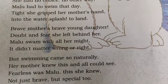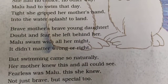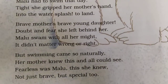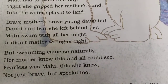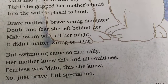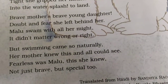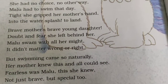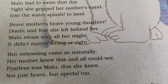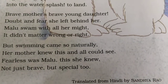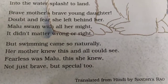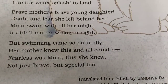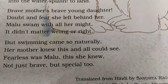But swimming came so naturally, her mother knew this and all could see. Fearless was Malu, this she knew — not just brave, but special too. Lekin jo Malu Balu thi, jab usne paani mein splash kiya, to usko naturally swimming aagi — means kuch bachche hote hain na jise god gifted hota hai, unko kuch cheezein easily aati hain. To aise hi Malu Balu ko swimming naturally aayi, kyunki jitne bhi bears vaghera hain, unko barf mein woh log swimming kar sakte hain. Uski mother ko pata tha ki unki beti bahut fearless hai, usse dar nahi lagta, aur woh easily swimming seekh sakti hai. Aur jo Malu Balu thi, woh sirf brave hi nahi thi, woh aur bhi special thi.